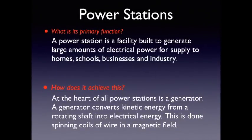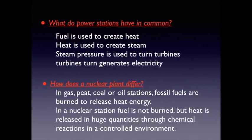If we look at power plants and power stations themselves, what is the primary function? A power station is a facility built to generate large amounts of electrical power for supply to homes, schools, businesses and industry. At the heart of all power stations is a generator — a generator converts kinetic energy from a rotating shaft into electrical energy, done by spinning coils of wire in a magnetic field. What do power stations have in common? A very simple process: fuel is used to create heat, heat is used to create steam, the pressure from the steam turns a turbine, and the turbine turns the generator to create electricity.